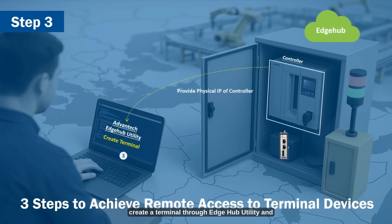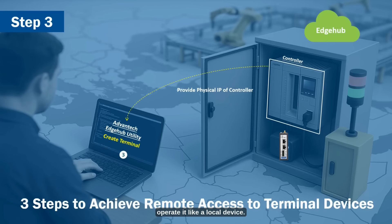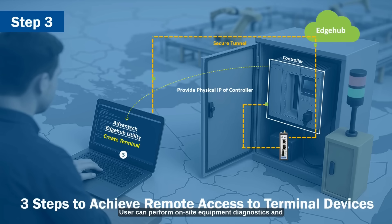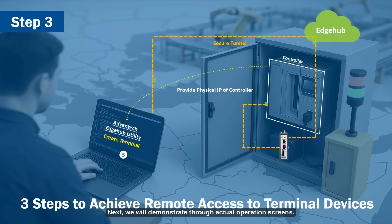Step 3: Create a terminal through Edge Hub utility and operate it like a local device. Remotely access terminal devices behind the ECU at any time, like a controller. Users can perform on-site equipment diagnostics and maintenance updates. Next, we will demonstrate through actual operation screens.